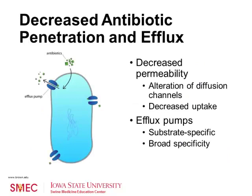Decreased antibiotic penetration and efflux are additional resistance mechanisms. Bacteria can decrease the permeability of the cell wall by altering diffusion channels, reducing the amount of antibiotic that can enter the cell. Bacteria can also produce more efflux pumps across the membrane to pump out the antibiotic after it has already entered the cell. These efflux pumps can be specific to a particular antibiotic or affect a broad range of antibiotics.